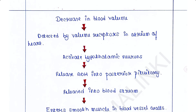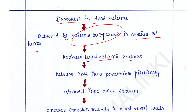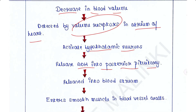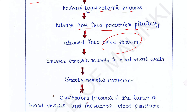One more stimulus for ADH secretion is a decrease in blood volume. Decreased blood volume is detected by atrial volume receptors in the atrium of the heart. Once stimulated, atrial volume receptors activate the hypothalamic neurons that synthesize and release ADH into the posterior pituitary.